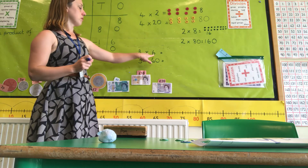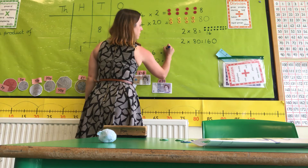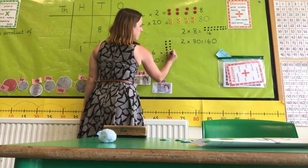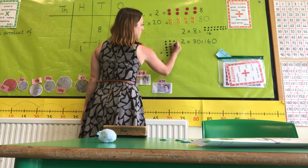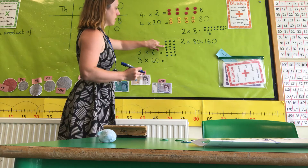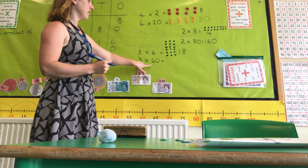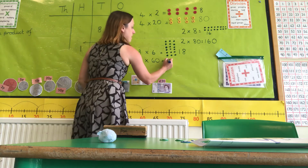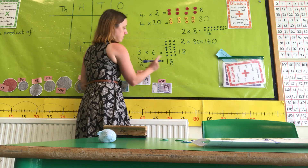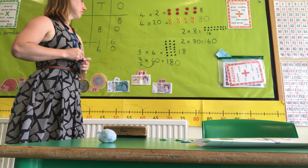So here I've got 3 multiplied by 6. Here I've got my 3 groups of 6. Using my array: 3, 6, 9, 12, 15, 18. So 3 times 6 is 18. Therefore, 3 times 60 is going to be 180, because I've multiplied my 3 and my 6, and then I move the place value across and put my 0 in.